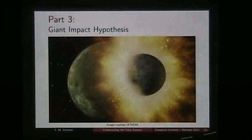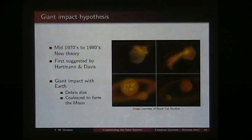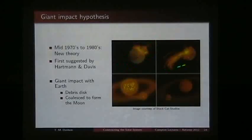That's where we enter the giant impact hypothesis. Impacts between bodies are an important event with a range of consequences. In the mid-1970s, a new theory was suggested in 1975 by Hartmann and Davis. They proposed that a giant impact could form the moon. In 1984, a conference of leading scientists gathered to discuss and reach a consensus, and that's when this theory really started to take hold. The idea is that an object impacts the young Earth, throws material into a debris disk, and from that disk the moon coalesces.